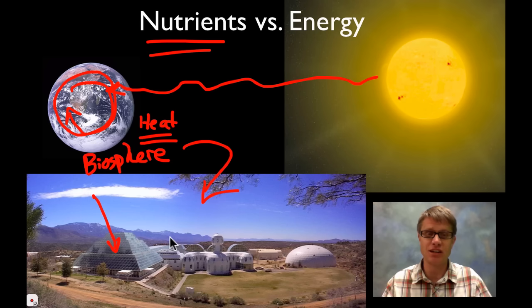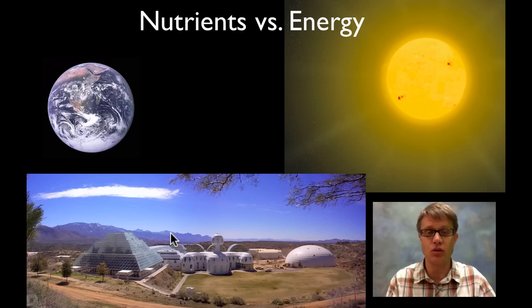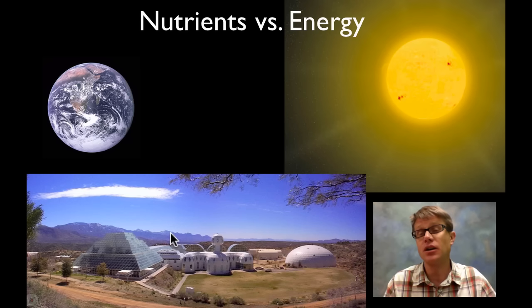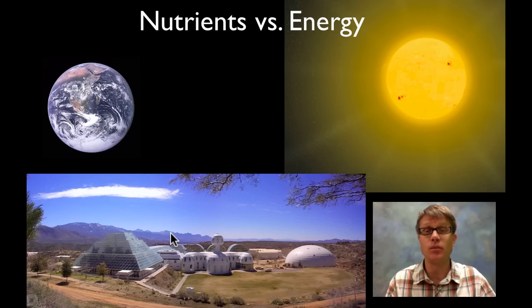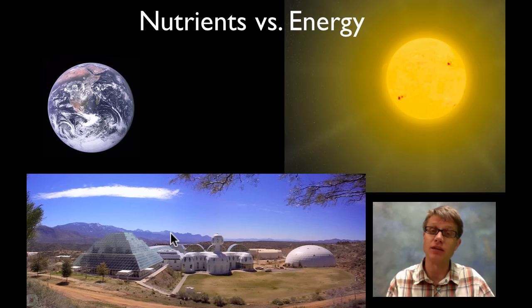But they tried to recycle the nutrients. It worked okay — they didn't really get a good balance and so they had to open it up occasionally. And so there are cycles by which we can return nutrients from life to non-life and then back again.